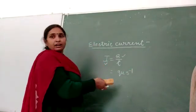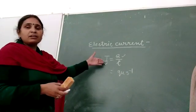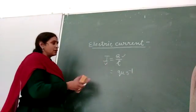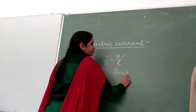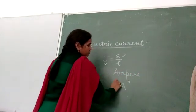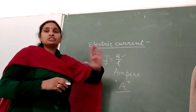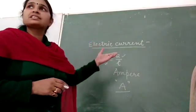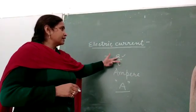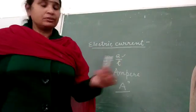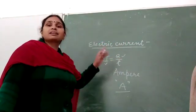The SI unit of electric current is well known as ampere, which is represented by A. The definition of electric current we have discussed in many ways — the rate of electric charge is known as electric current. Thank you.